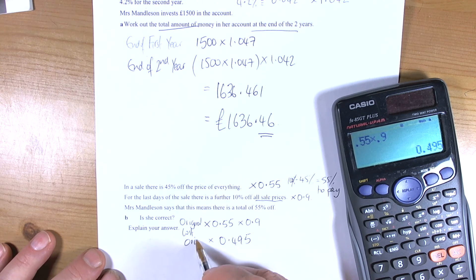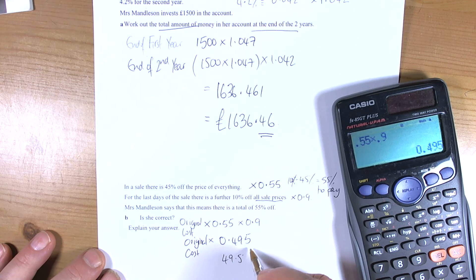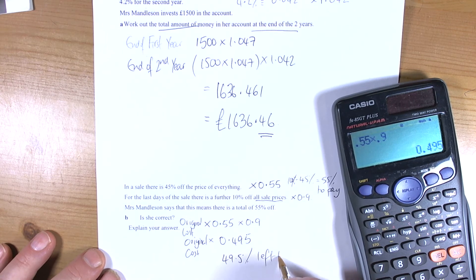So that's the same as doing the original cost times 0.495. So we have 49.5% left to pay.